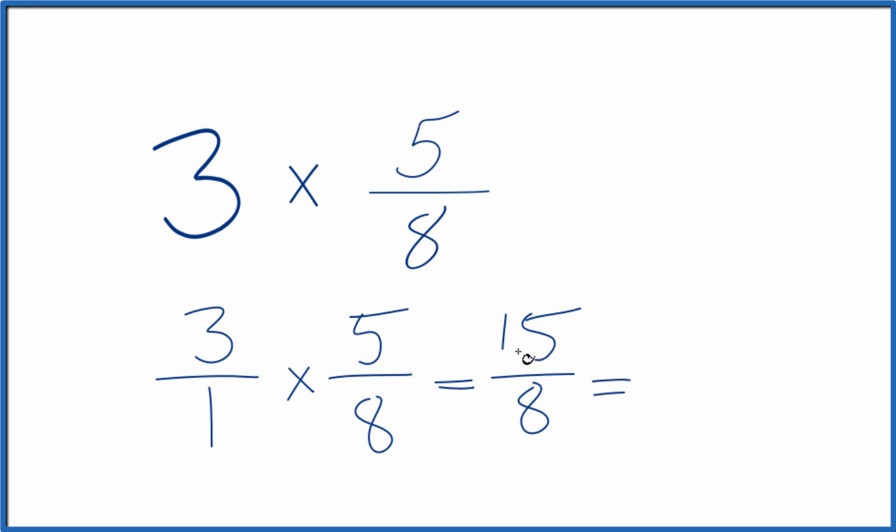And like we said before, we could change that to a mixed fraction, 1 and 7 eighths. This is Dr. B, multiplying 3 times 5 eighths.